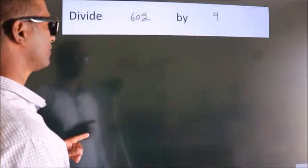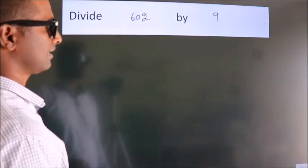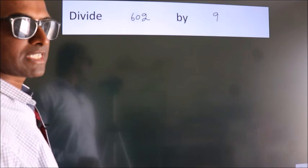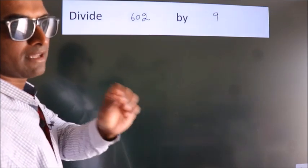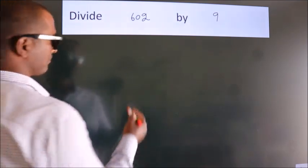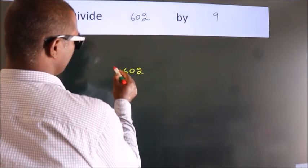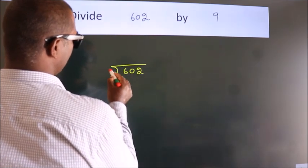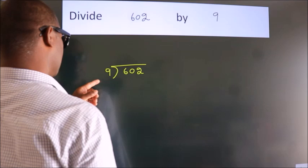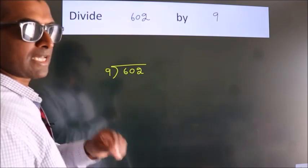Divide 602 by 9. To do this division, we should frame it in this way: 602 here, 9 here. This is your step 1.